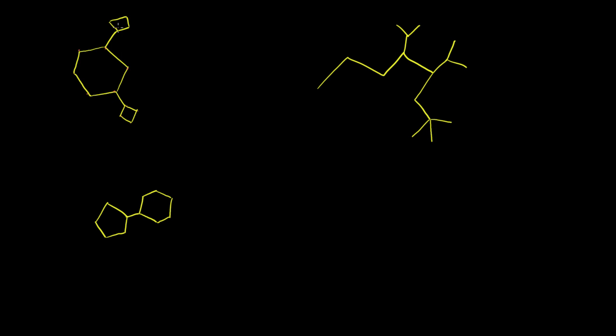These are each four carbon rings — one, two, three, four. So the largest ring is essentially going to be our backbone. So it's going to be this six carbon ring right here — one, two, three, four, five, six carbons. So that is a cyclohexane, all single bonds. That's why we get the 'ane', six carbons 'hex', and it's in a cycle, 'cyclo'.